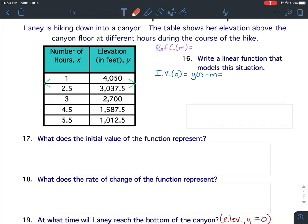Well, if it's a linear function, we know that the slope is the same throughout the problem. So I just picked the top two ordered pairs to find my slope. So I'm going to take 3,037.5 and subtract 4,050, and I get negative 1,012.5. And then 2.5 minus 1 is 1.5. So to find our slope, we'll take negative 1,012.5 and divide it by 1.5. Divide that out, and you should get negative 675.